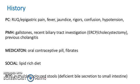In the history, the presenting complaint would include right upper quadrant pain or epigastric pain, fever, jaundice, rigors, confusion, and hypotension. Past medical history includes gallstones, recent biliary tract investigation, and previous cholangitis. For medications, note the oral contraceptive pill or fibrates. Social history may include a lipid-rich diet. In review of systems, look for putty clay-coloured stools.